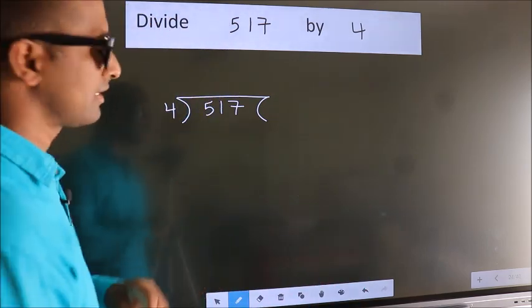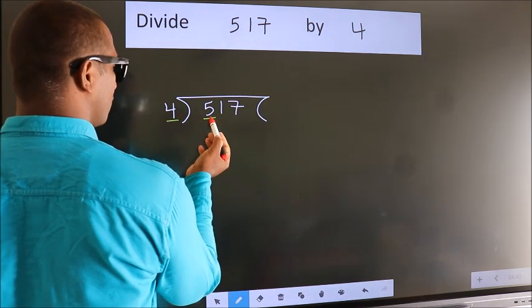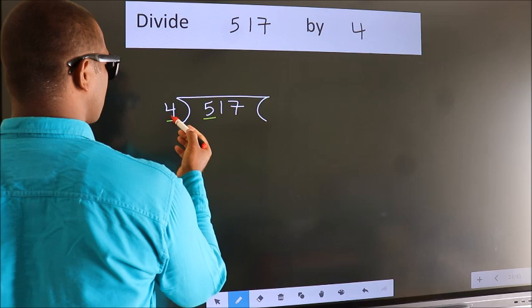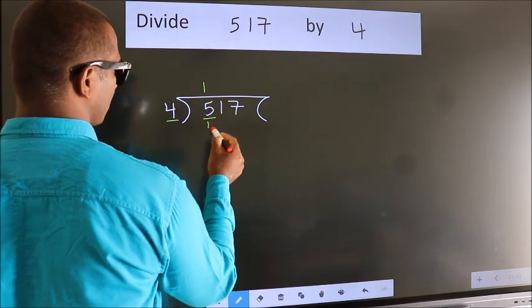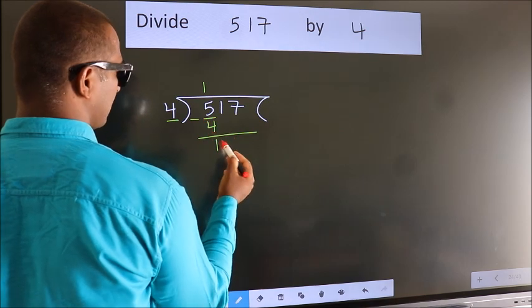Next. Here we have 5, here 4. A number close to 5 in 4 table is 4 once 4. Now, we should subtract. We get 1.